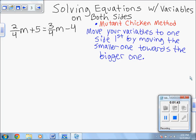So let's see. In our example, our two variables are 2 fourths m, positive 2 fourths m, and positive 3 fourths m. So what we're going to do is we're going to move the smaller one towards the bigger one. If you do this, you will avoid having a negative coefficient. If you can avoid having a negative coefficient, you will save yourself up to one step at the end of your equation. So if you always move towards your bigger one, you will avoid a negative coefficient.